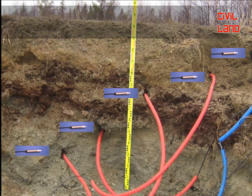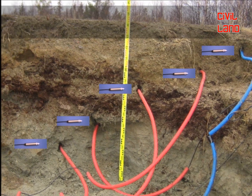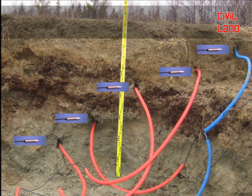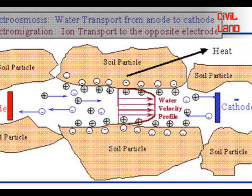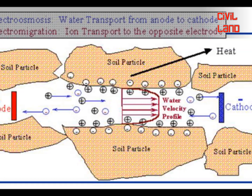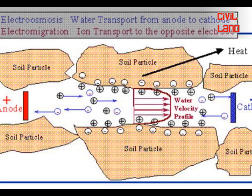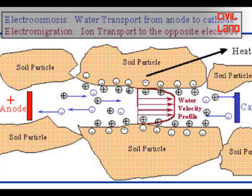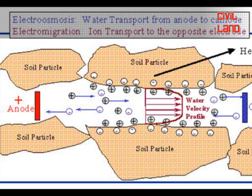Now comes electrical stabilization of clayey soil. Electrical stabilization of clayey soil is done by a method known as electroosmosis. This is an expensive method of soil stabilization and is mainly used for drainage of cohesive soils.